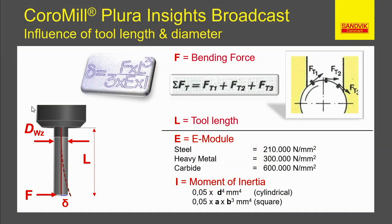The biggest problem when machining with long overhangs is tool deflection. Let's look at the mathematical formula and understand what causes this effect. We see here we have factors such as the bending forces, tool length, type of shank we are using, and moment of inertia.